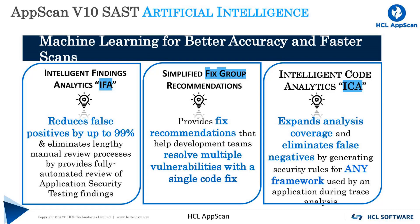By applying cognitive techniques, IFA reduces a set of findings into fixed groups. Fixed groups show developers precisely where the security issues reside in the code, enabling them to remediate multiple problems simultaneously. Developers see between 5 and 10 fixed groups tied to hundreds of security issues, and IFA empowers developers to fix them all in one integrated development environment, or IDE.